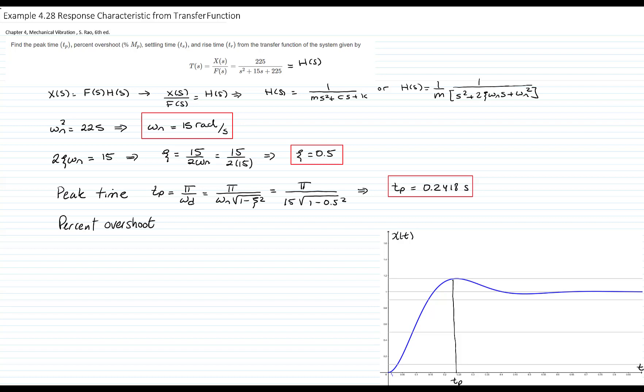Now we calculate the percent overshoot, which is defined as 100 times e to the negative pi zeta over square root of 1 minus zeta squared. Let me input the value. E to the negative pi zeta is 0.5 square root of 1 minus zeta squared.